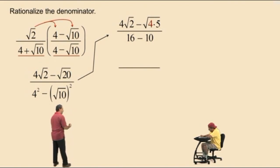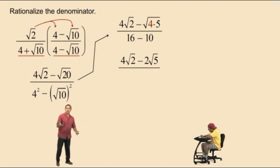Now, let's bring down our work. We have 4 square roots of 2 subtract. What's the square root of 4, Charlie? 2. Okay, we'll bring that out. And don't forget, we still have to multiply by square root of 5. Our denominator is 16 subtract 10, which is 6.